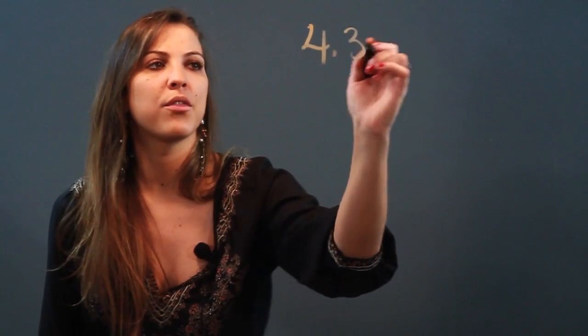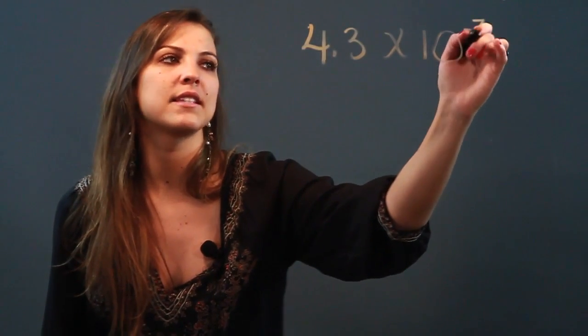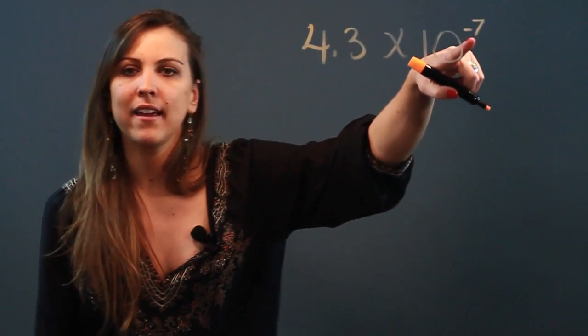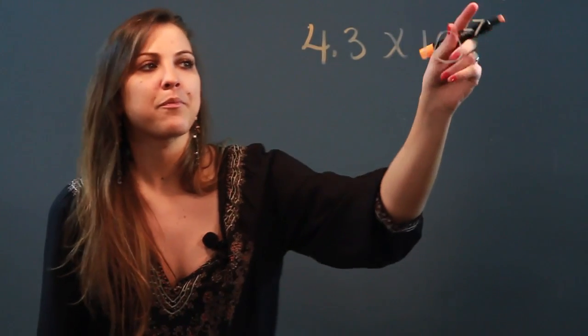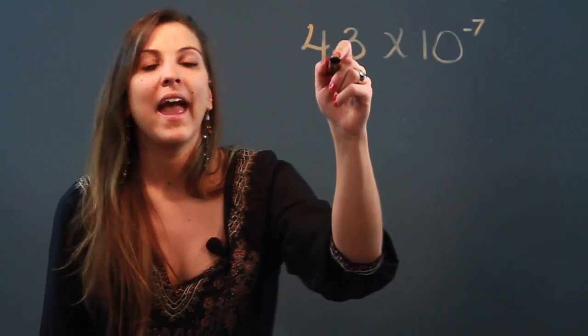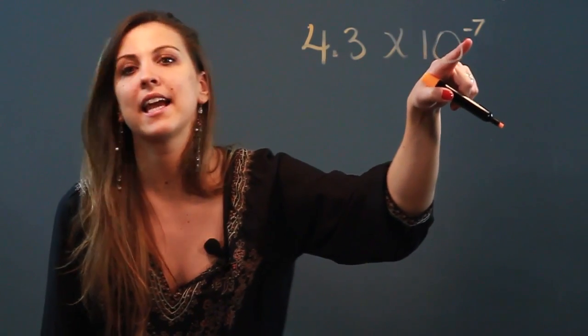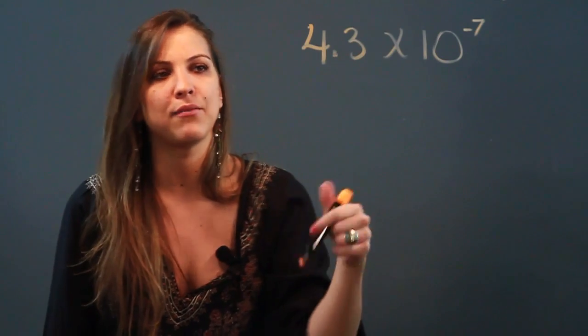So if I've got the number 4.3 times 10 to the negative 7th power, what that negative 7 exponent does is that it indicates to me that I have to take this decimal point and I have to move it 7 spaces to the left. Because it's a negative exponent, I'm going to move to the left.